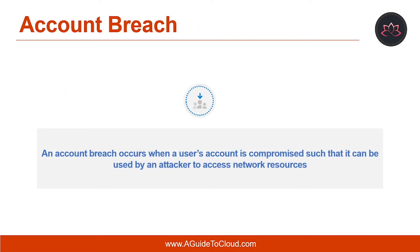An account breach occurs when a user's account is compromised such that it can be used by an attacker to access network resources. If the account is an administrative account, the hacker can immediately begin sourcing the network to gain access to critical data. If the breached account is a regular user, the hacker can use various techniques to obtain administrator privileges — referred to as an elevation of privilege. One recommended method to mitigate an account breach is to use multi-factor authentication.